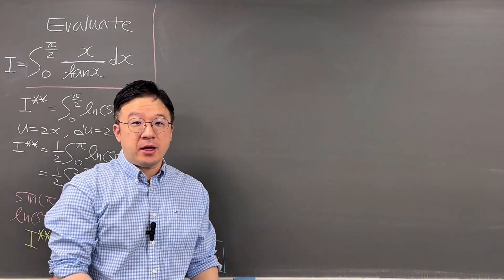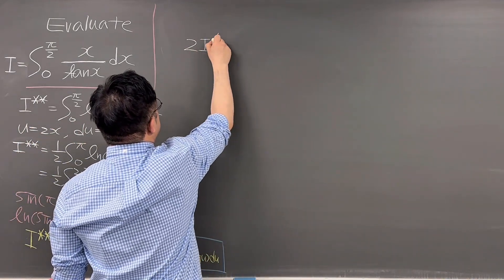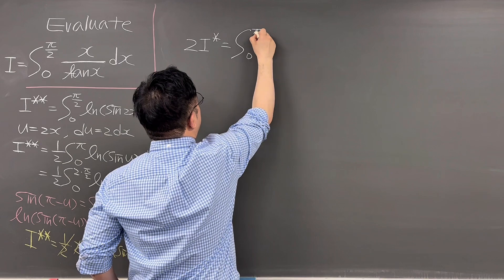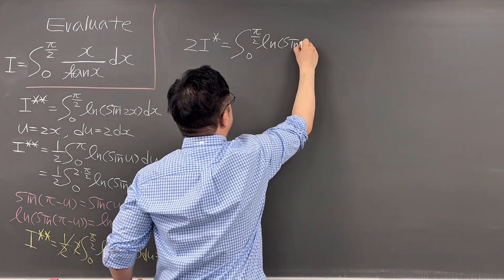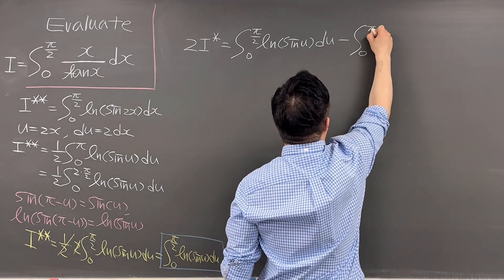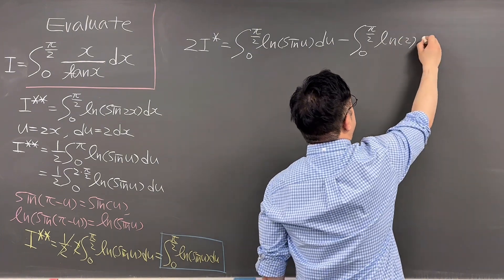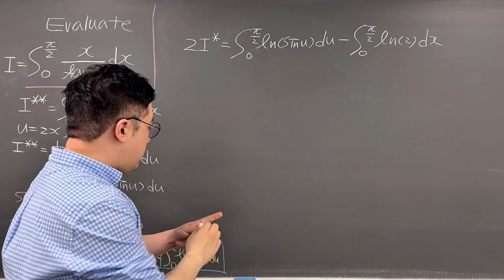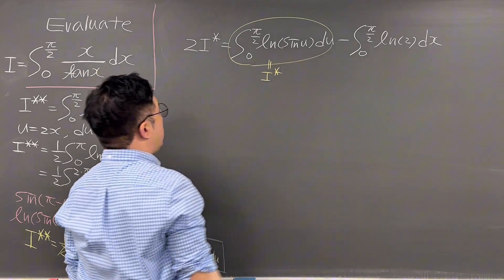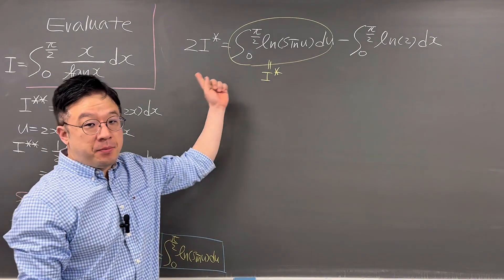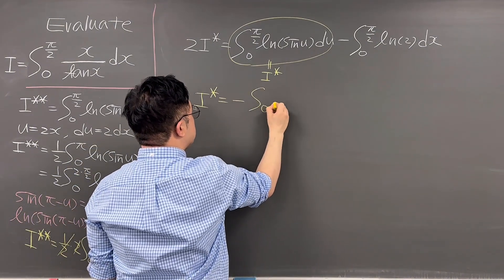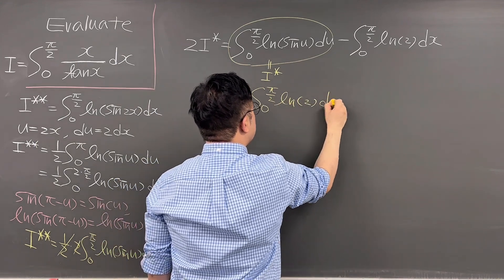Okay, using this, let's go back to 2 times I star. So 2 times I star equals the integral from 0 to pi over 2 of ln(sine u) du minus the integral from 0 to pi over 2 of ln 2 dx. Since I double star equals I star, subtracting I star from both sides gives I star equals negative the integral from 0 to pi over 2 of ln 2 dx.